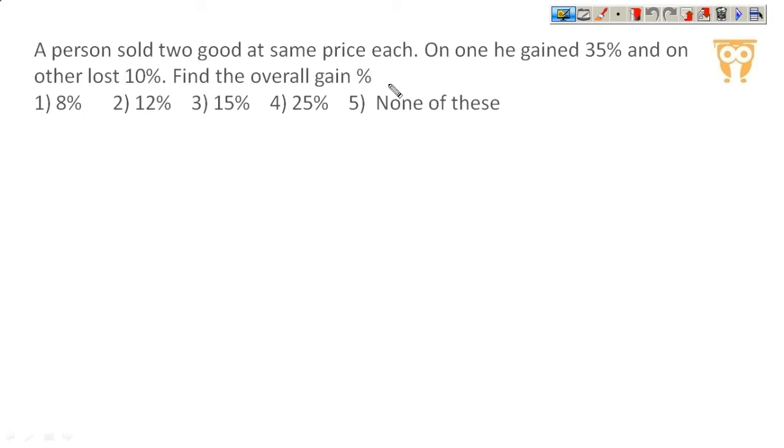A person sold 2 goods at same price each. Two goods, both selling prices are the same. On one he gained 35% and on the other lost 10%. Find the overall gain percent. When profit percentage and loss percentage are equal, the formula is x squared upon 100, but this question is not the same. The selling prices are equal.